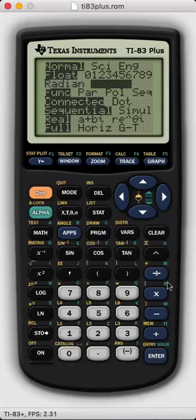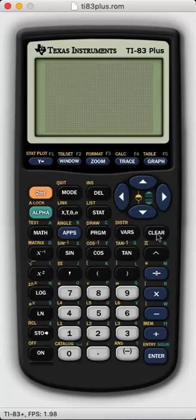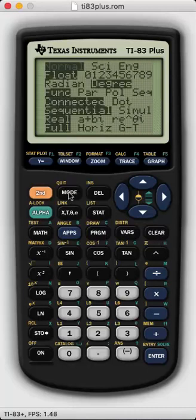Once you set those on your calculator you should be okay. Just hit the clear button, and then if you want to check to see what mode your calculator is in, just hit the mode button again and it should show up right there.